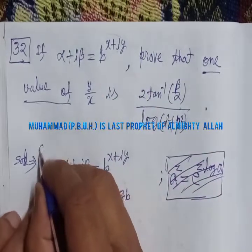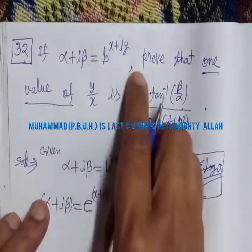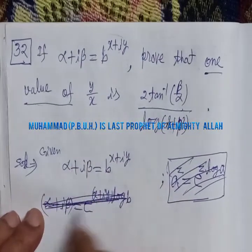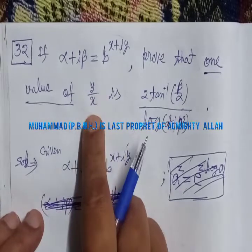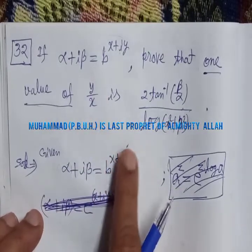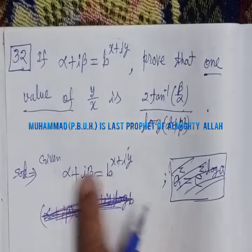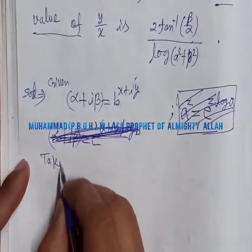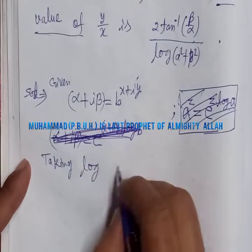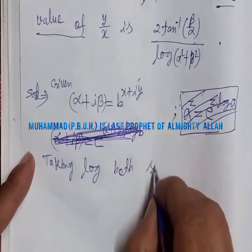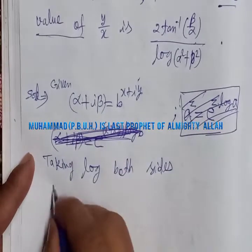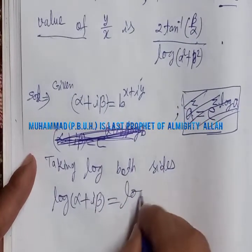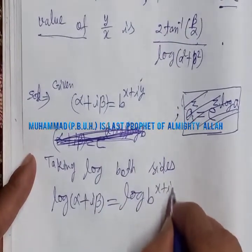We have α + iβ = b^(x+iy). Now we take log of both sides. Taking log of both sides, we get log(α + iβ) = log of b^(x+iy), which equals (x + iy) · log b.